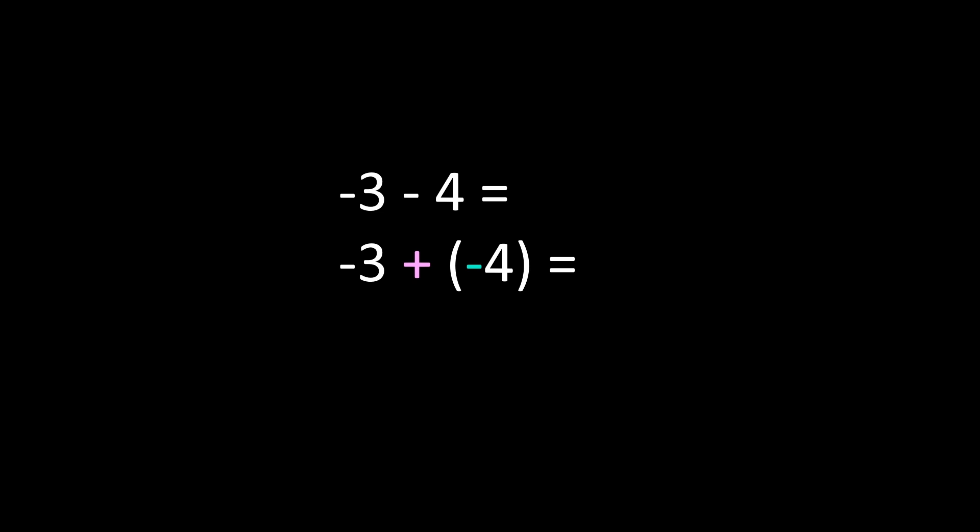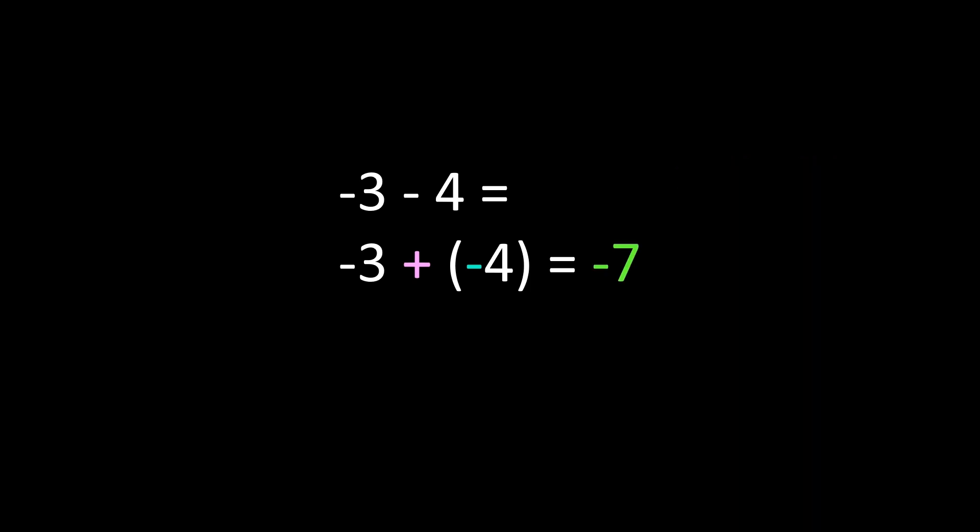You may also want to add parentheses around the negative 4 so you can see that the negative sign is grouped with the 4. We are adding integers with the same sign — we have negative 3 plus negative 4. So 3 plus 4 is 7, and when we add integers with the same sign we keep that sign. So our answer is negative 7.